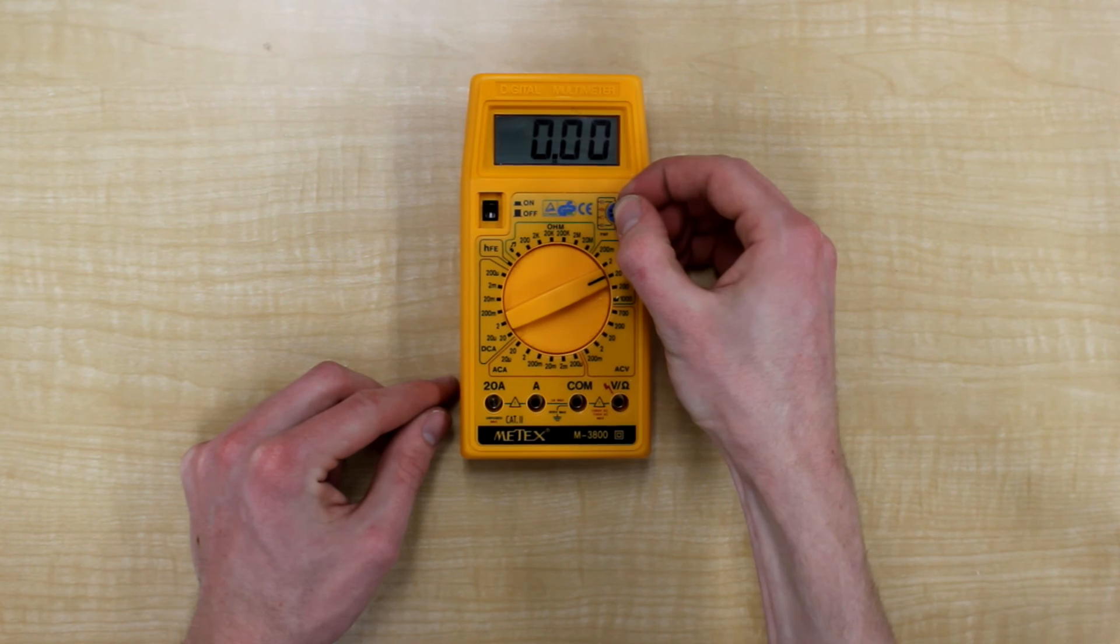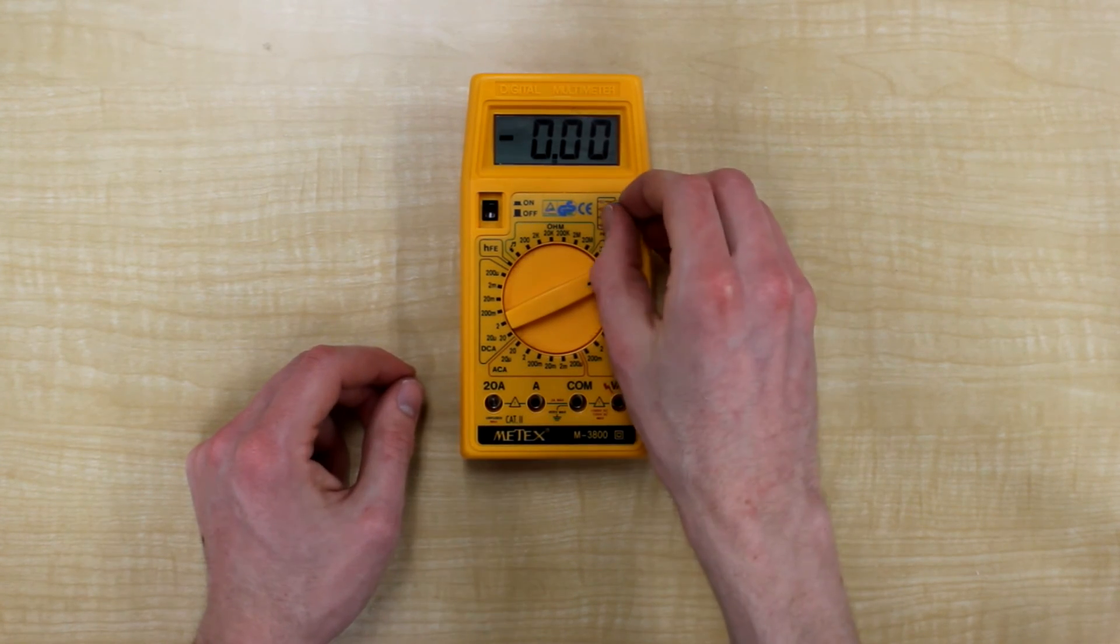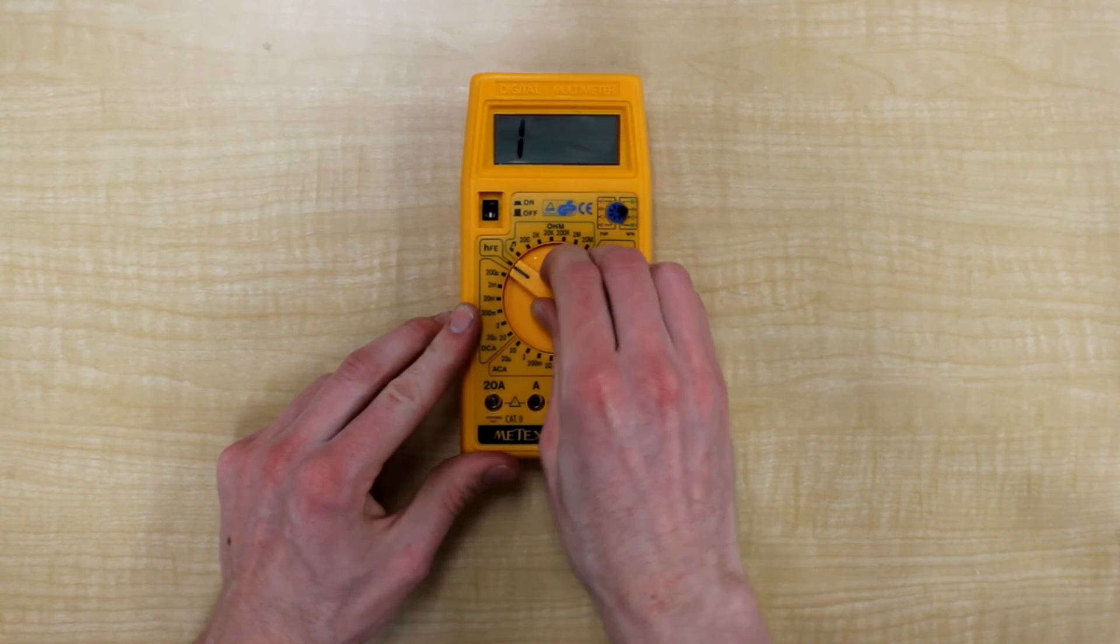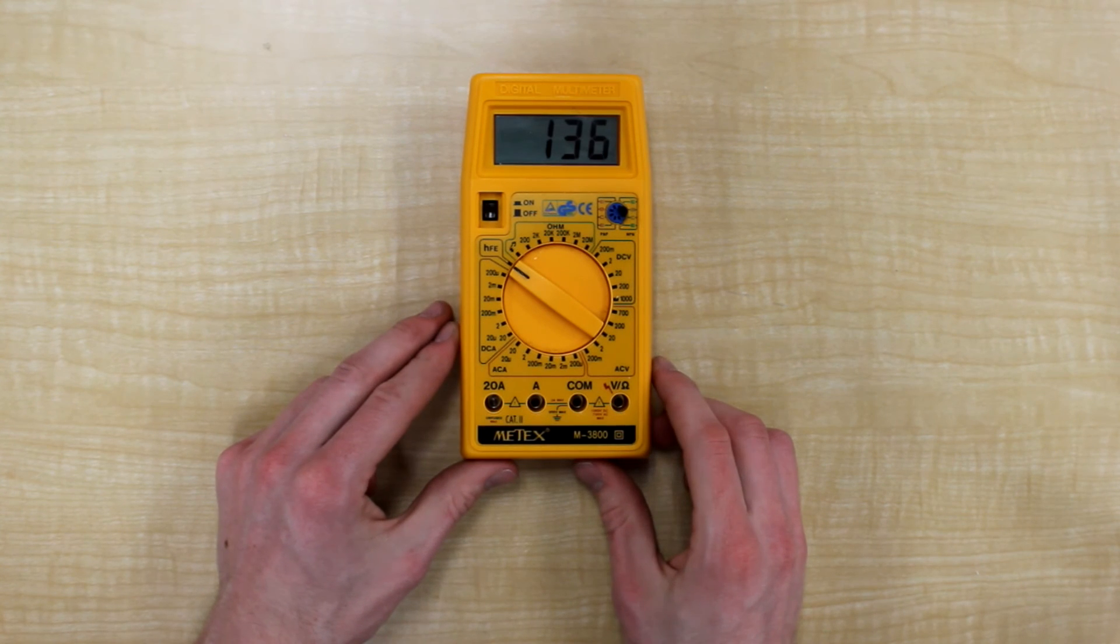Press it down until it goes in firmly. And change over to the HFE setting. That right there is your beta value for the transistor.